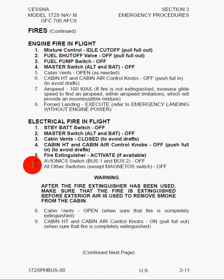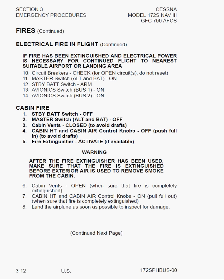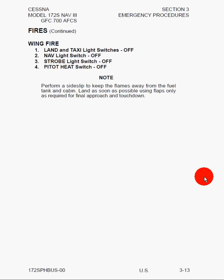Here we have engine fires in flight — a very dangerous situation — and electrical fires in flight, also very dangerous. There's a warning that says after the fire extinguisher has been used, make sure that the fire is extinguished before exterior air is used to remove smoke from the cabin, because if you open the window and reintroduce oxygen, that's one of the main things you need for combustion. There's also information on cabin fires, with a note to perform a slip to keep flames away from the fuel tank and cabin, and to land as soon as possible using flaps only as required for final approach and touchdown.